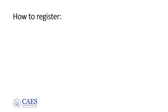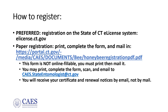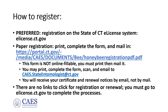The preferred method of registration is through the state of Connecticut e-license system. You may also complete and mail in a paper form found at the Experiment Station website. The form is not online fillable — you must print it, complete it, then mail it in. You may also print the form, complete it, then scan and email the form to the address shown. You will receive your certificate and renewal notices by email to the address you have provided. There are no links to complete the registration or renewal; you must go to the website to complete the process.